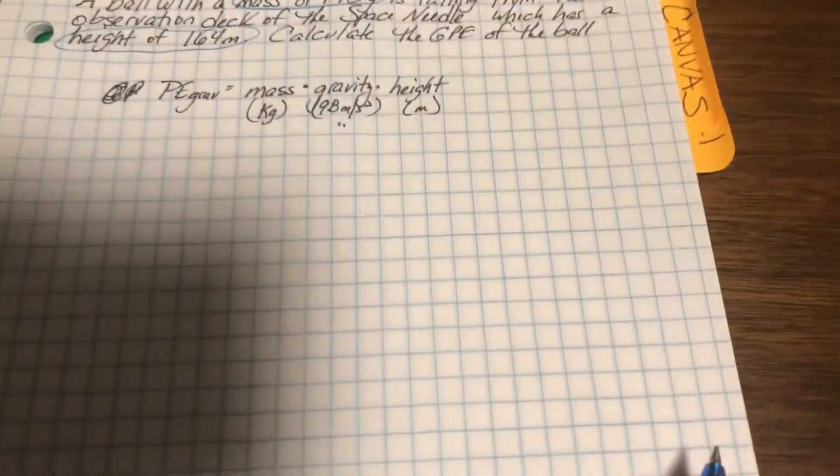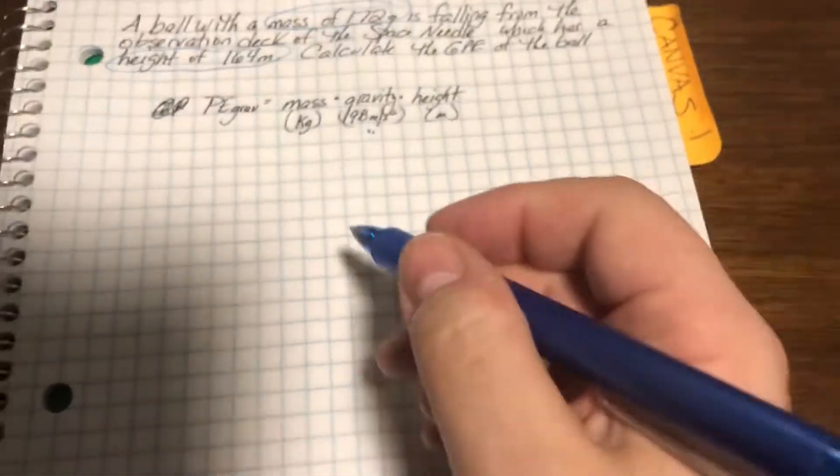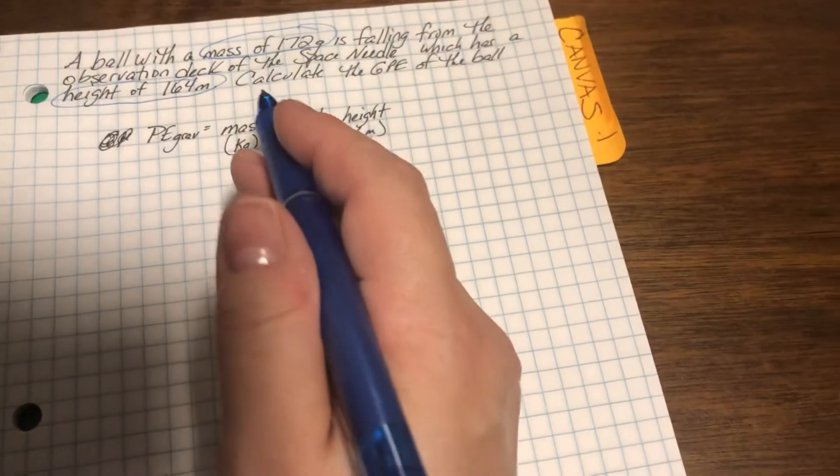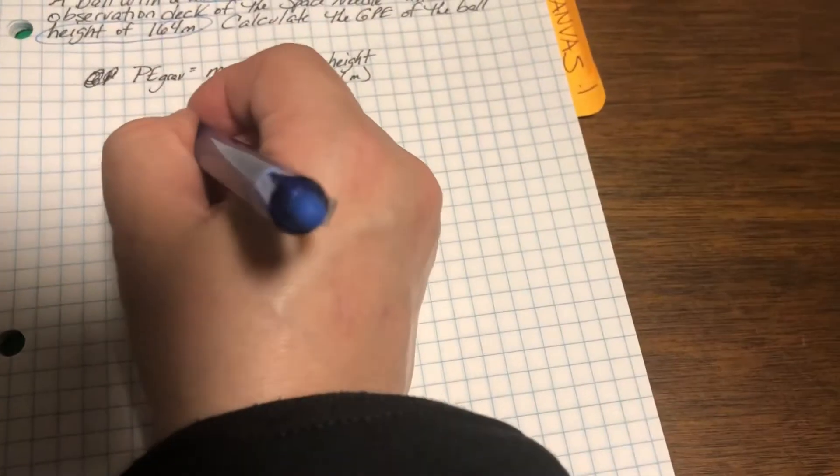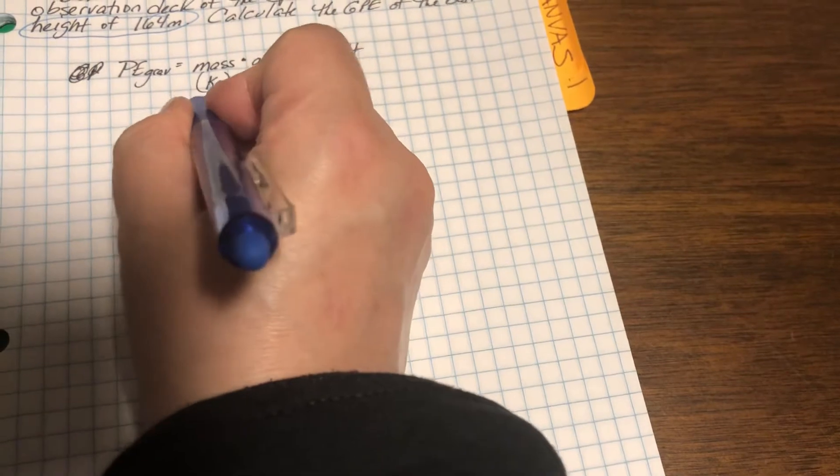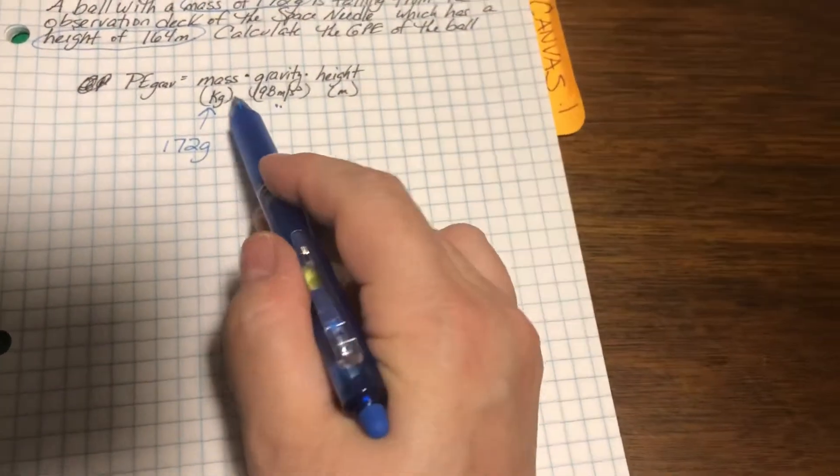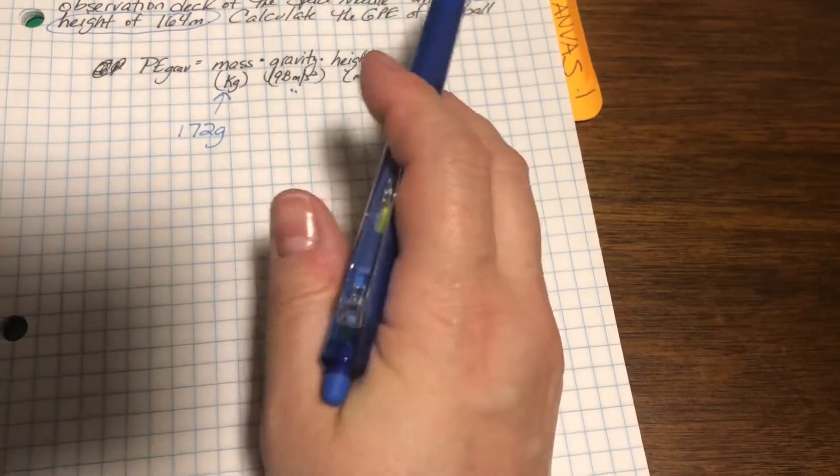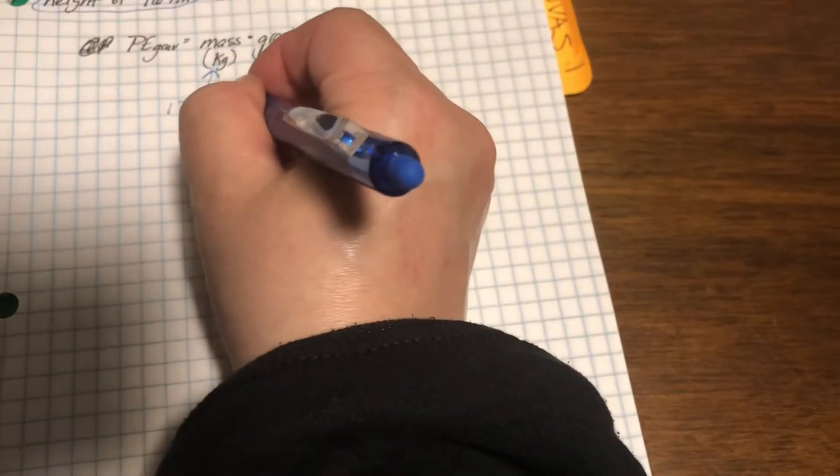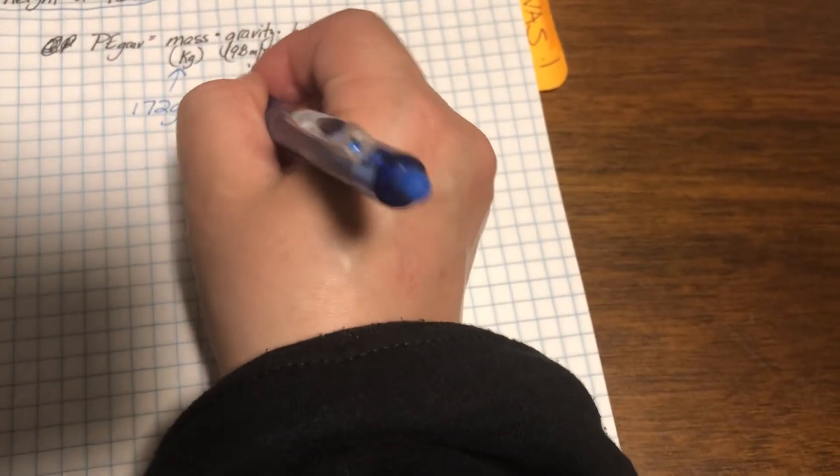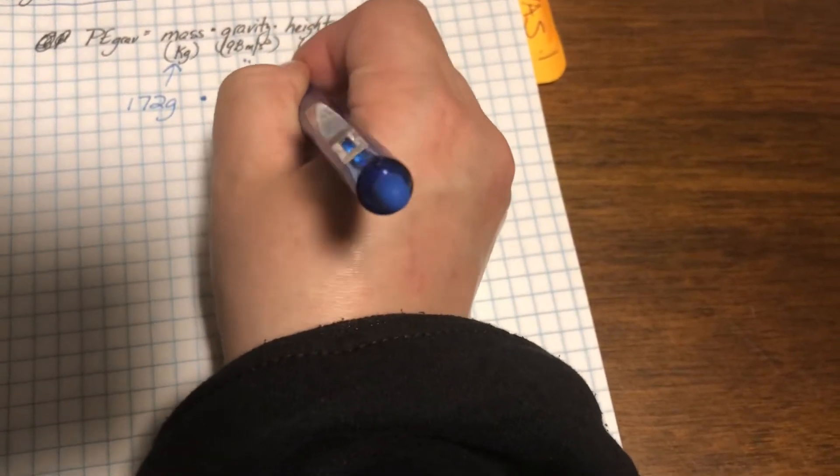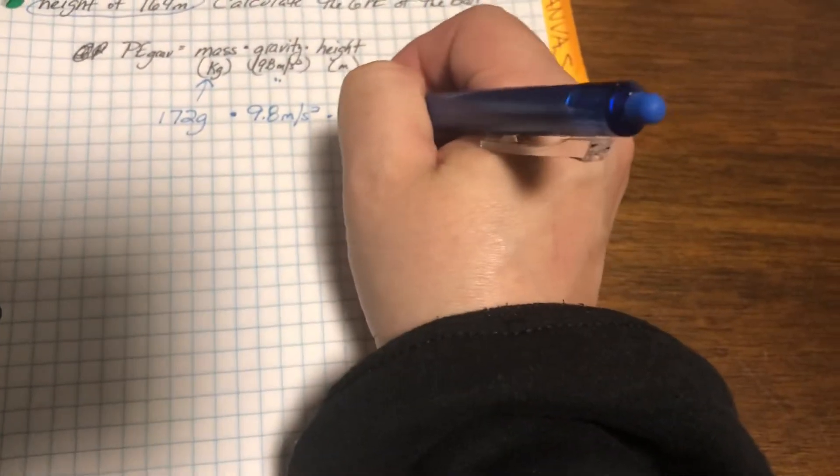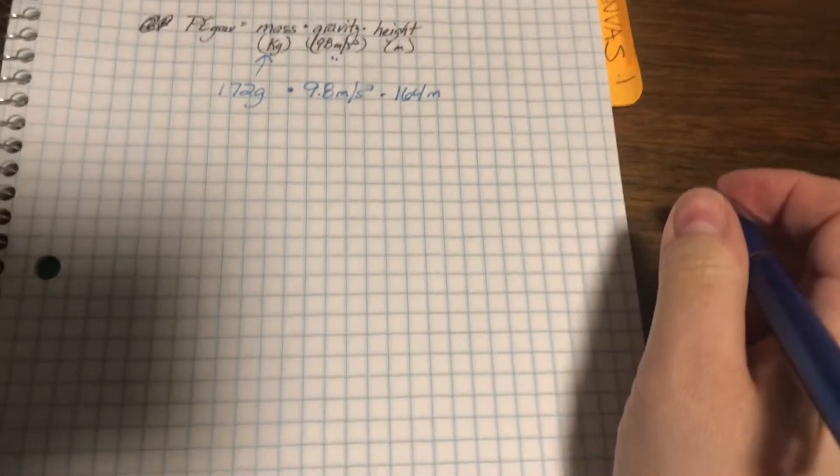So now I'm going to take those values and plug it into my formula. So I know the mass is, they're telling me it's 172 grams, but our formula calls for kilograms. So let's just fill in the rest. Gravity is 9.8 meters per second squared. And our height is 164 meters.